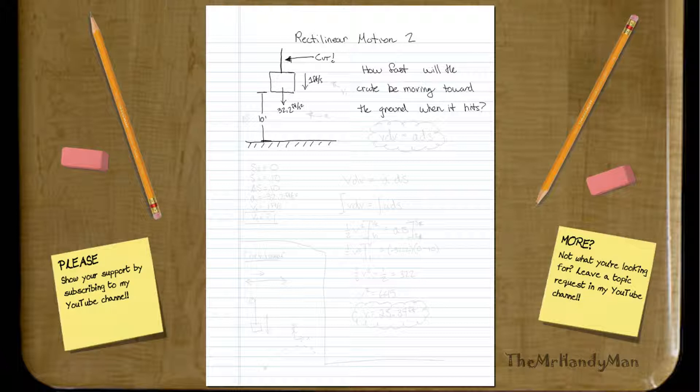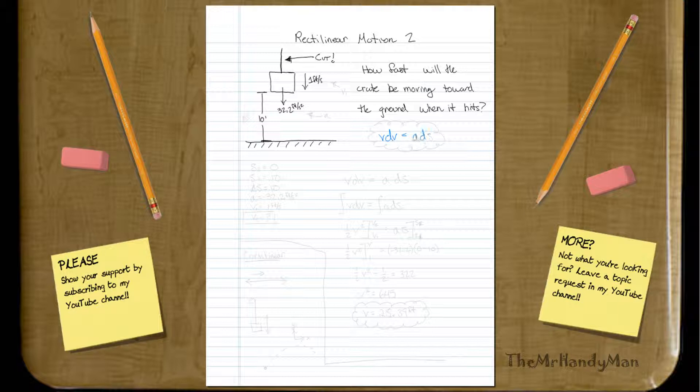And I'll write it down right here: vdv is equal to ads. Some people wonder why we're using that one. It's because we know the delta s, and the delta s is 10 feet, the delta s right here.